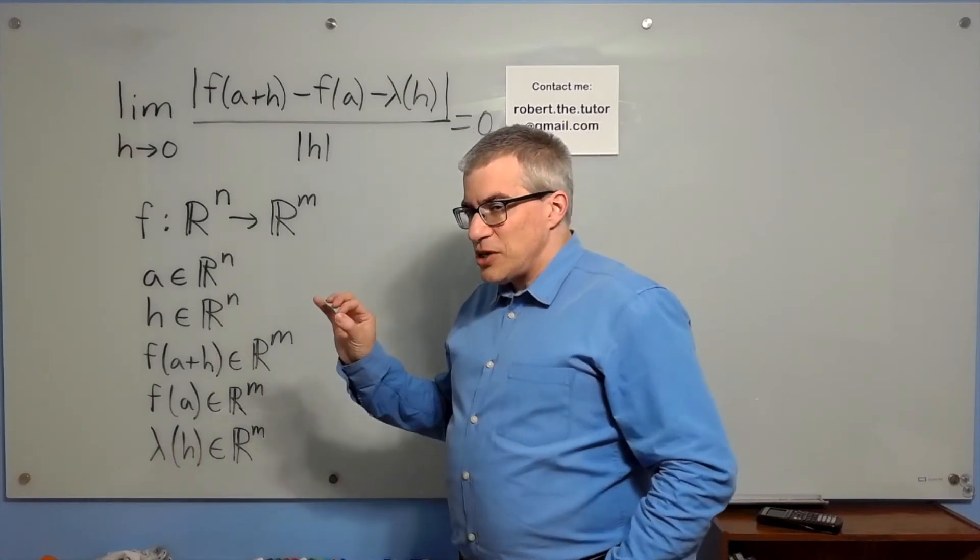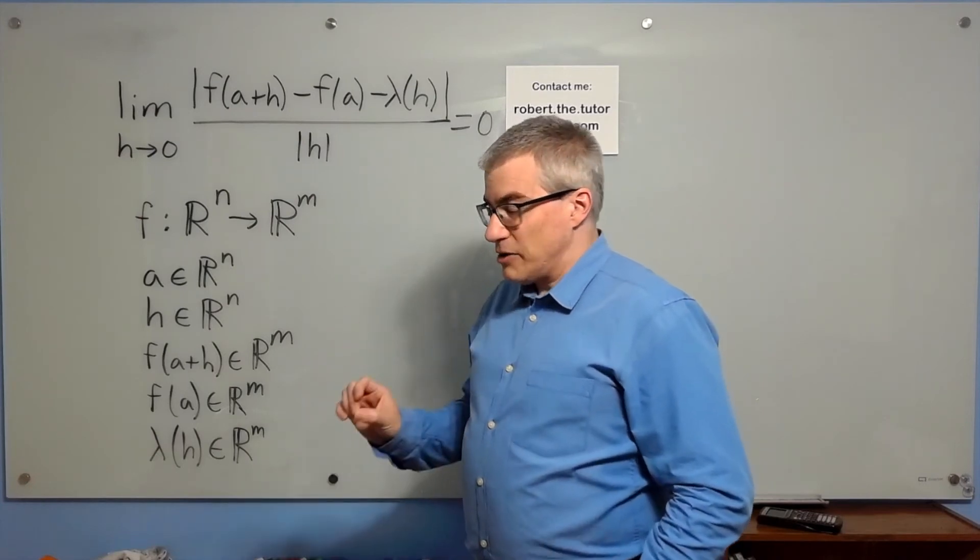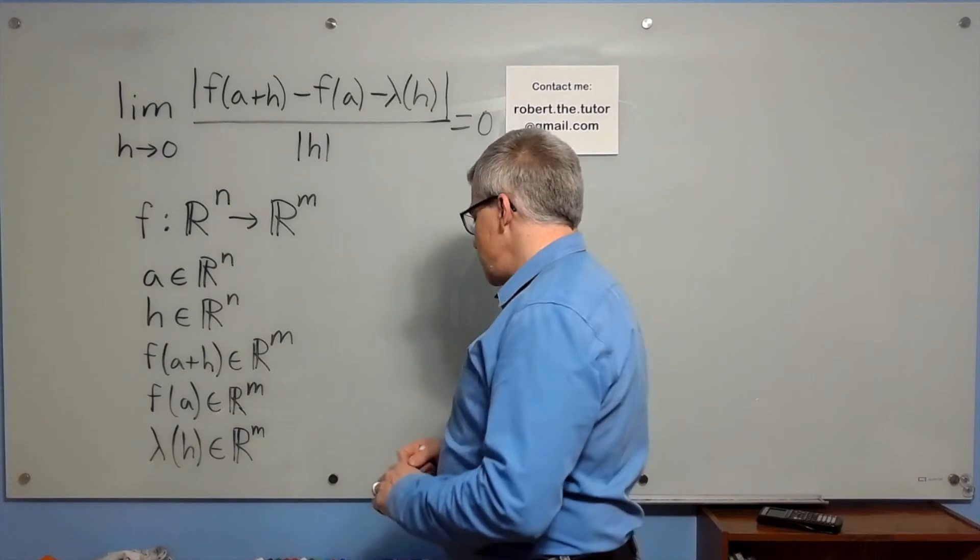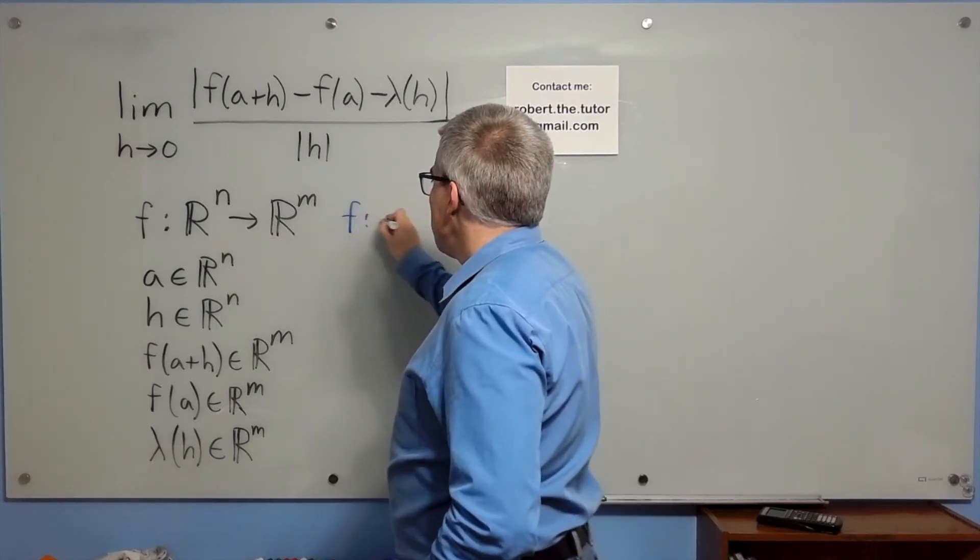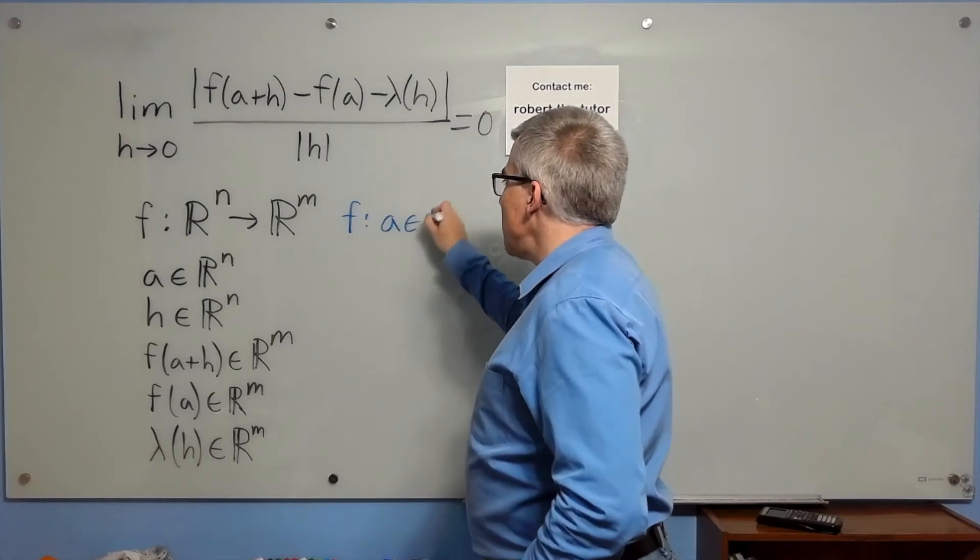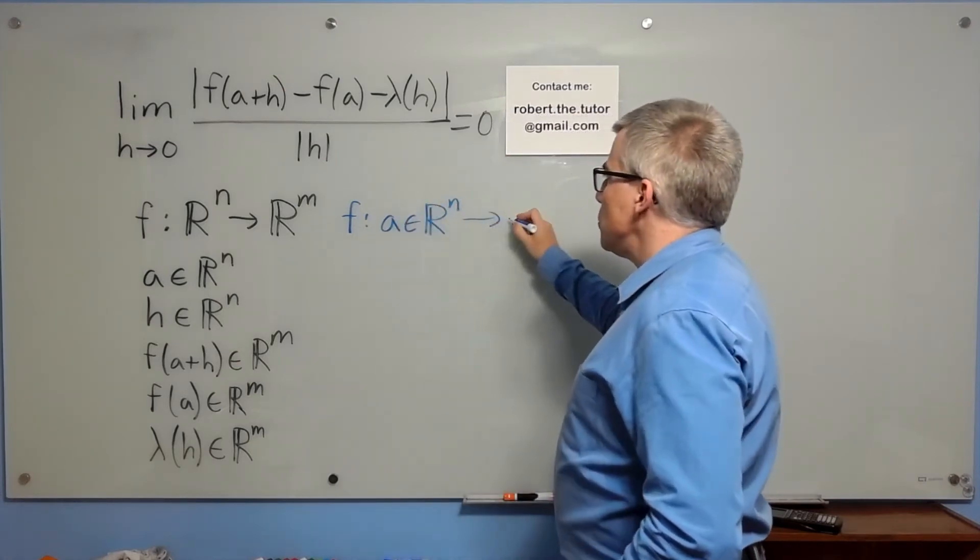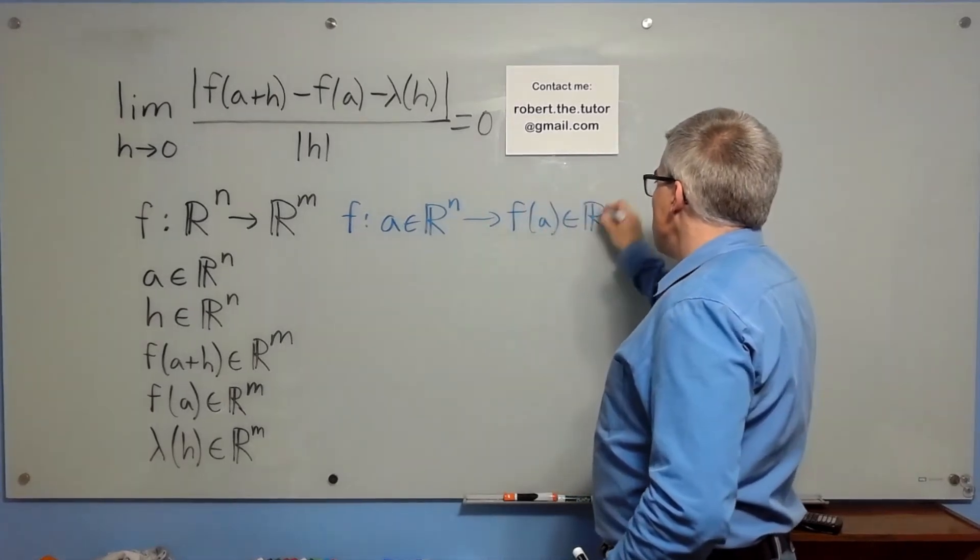Because some of the notation got a little tricky, I decided that I needed even more clarity. So I decided to take this expression and make it more explicit. What I write instead of that is I say f maps a, which is an element of R^n, to f of a, which is an element of R^m.